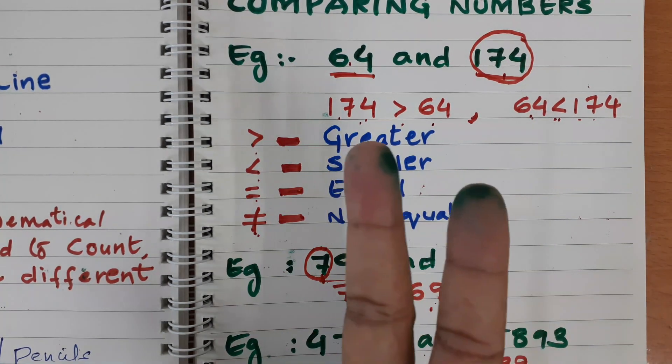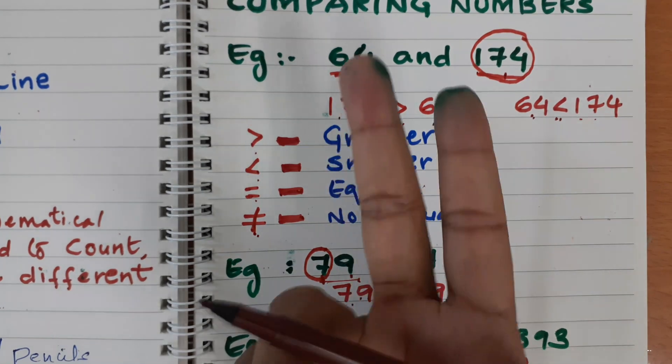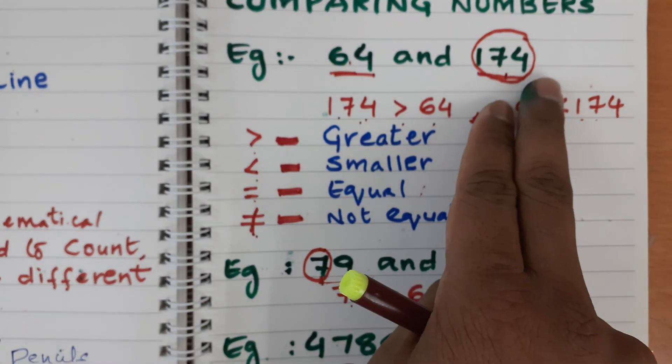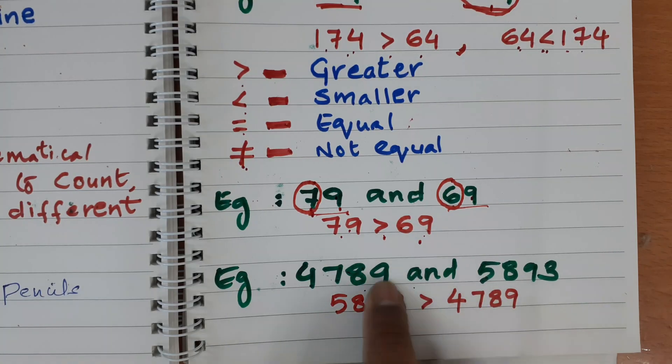Like this we can compare two digit number. Here 2 digit and 3 digit number. Let us take an example of 4 digit numbers.